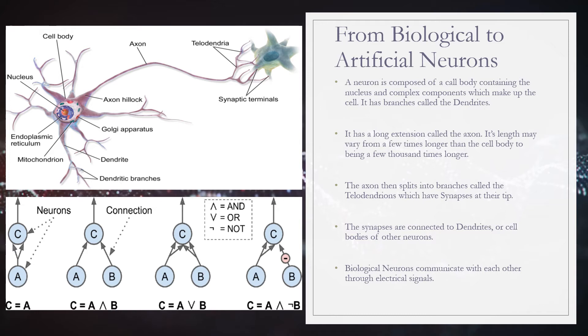Near its extremity, the axon splits off into many branches called telodendrions, and at the tip of these branches are microscopic structures called synapses, which are connected to the dendrites or cell bodies of other neurons.